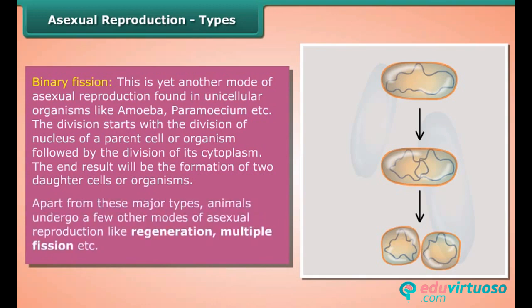Apart from these major types, animals undergo a few other modes of asexual reproduction like regeneration and multiple fission, among other artificial methods of reproduction.